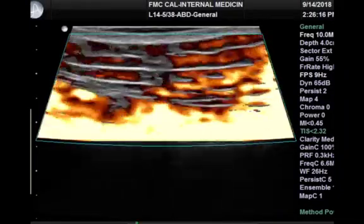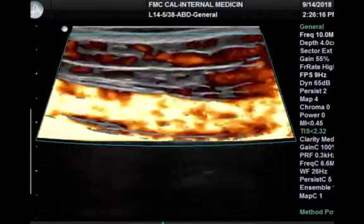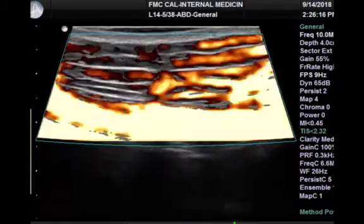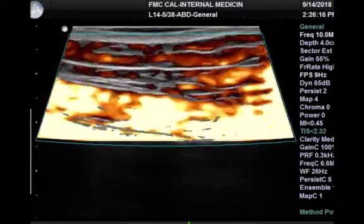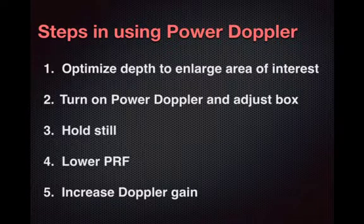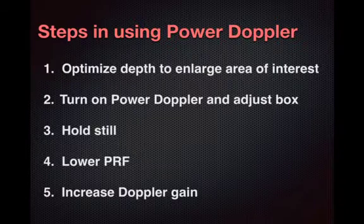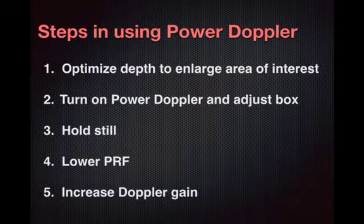Power Doppler definitely has the advantage that it's irrelevant which direction flow is going — all it's detecting is movement. Because it's so sensitive to movement, one downside is that if I'm over-caffeinated or can't control my tremor, any movement is going to cause the whole screen to light up and be very difficult to interpret. I tend to use a linear transducer for most patients; curvilinear can work for patients with higher BMI or thicker abdominal walls, but the linear transducer offers higher resolution and is generally preferred.